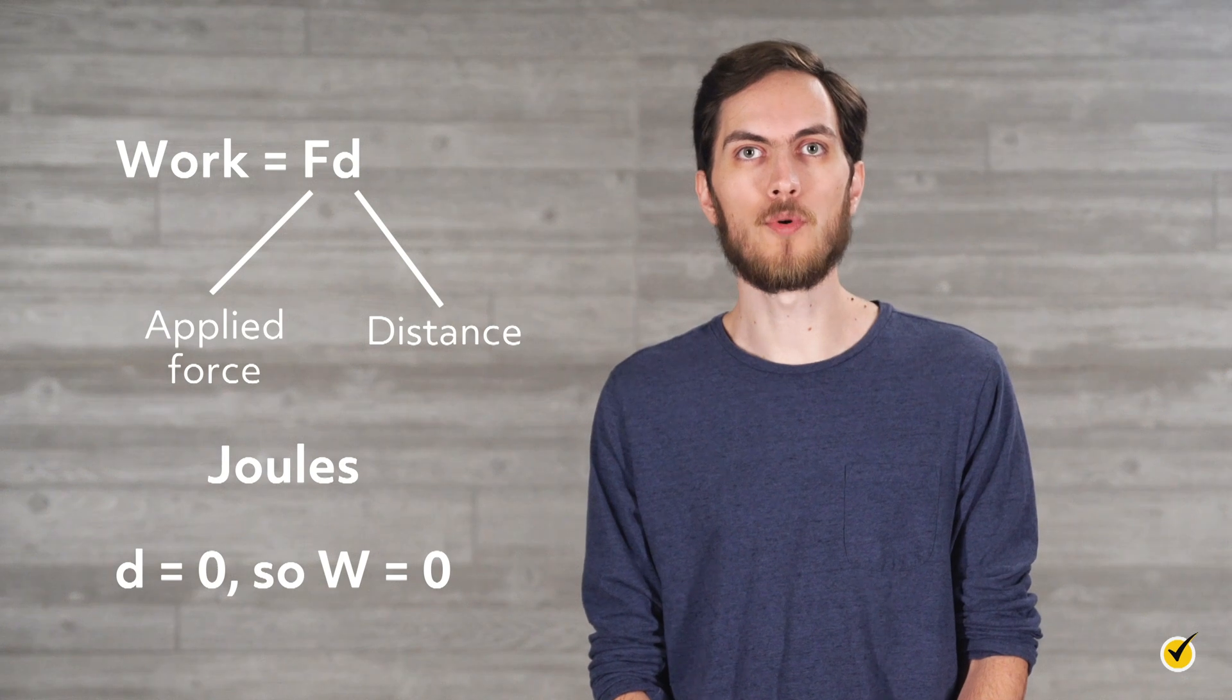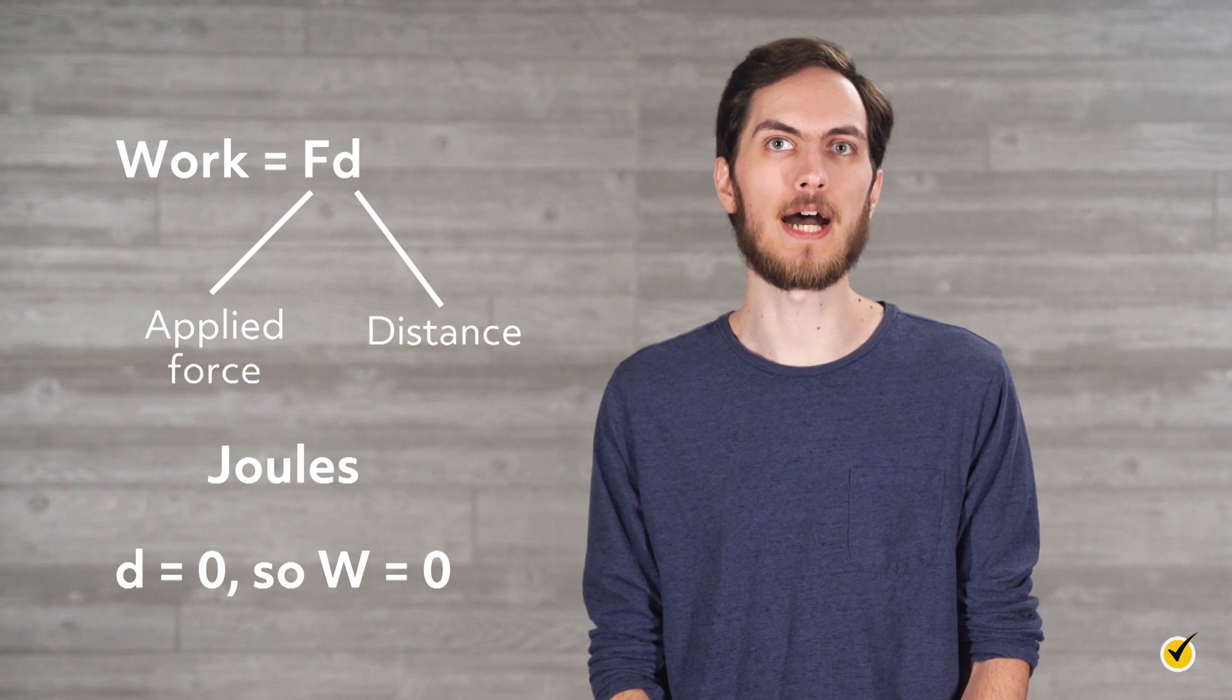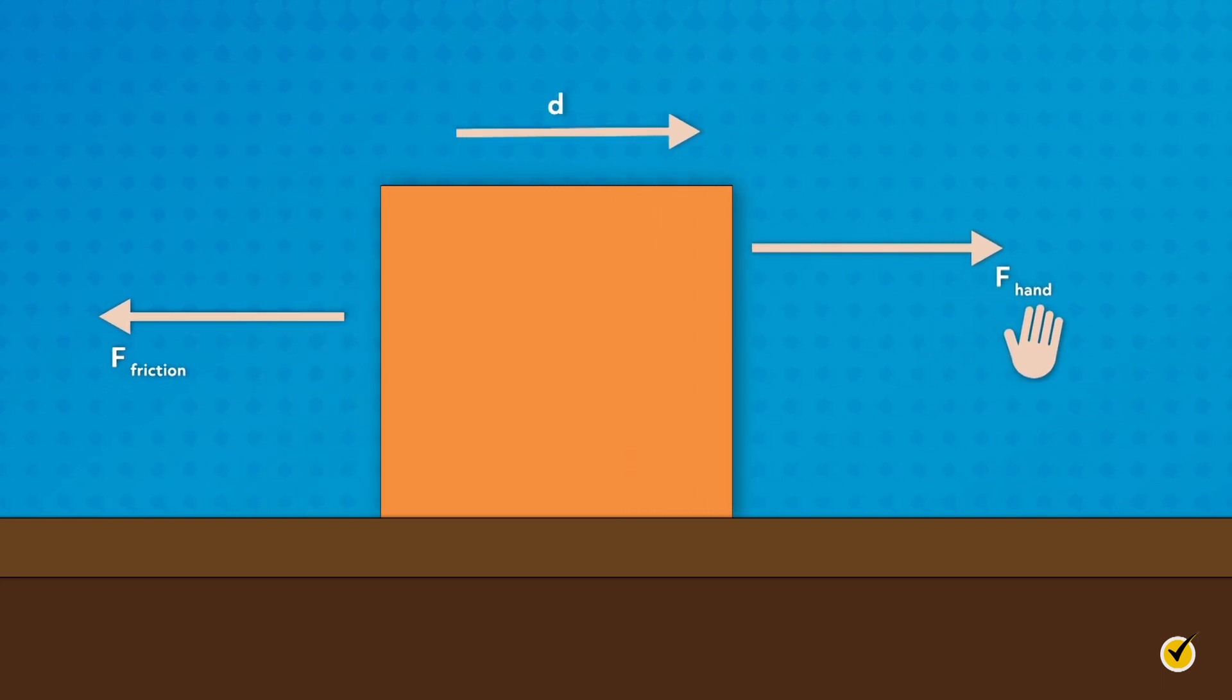In many cases, there is more than one force acting on an object. Let's go back to the example where your hand is pushing an object. Let's say that the object is a box sitting on the table. While you push the box forward, friction, another force, is pushing the box in the opposite direction. In this case, the force is negative since it points in the direction opposing the box's motion. This means that friction is doing negative work on the box, and the value for work of friction will be negative, while the work done by your hand is positive. Essentially, negative work makes it more difficult to keep an object moving in the positive direction.